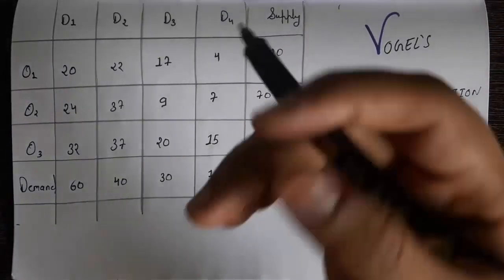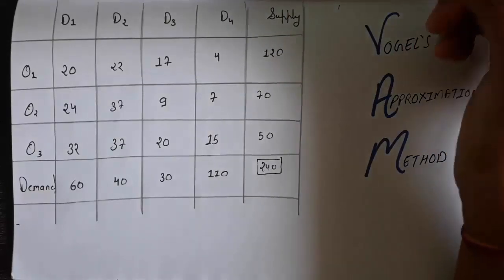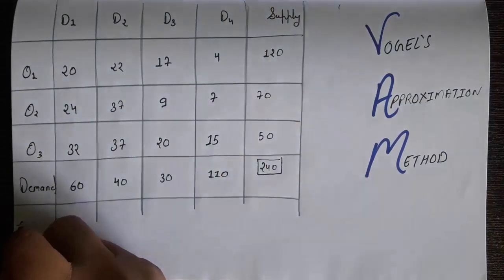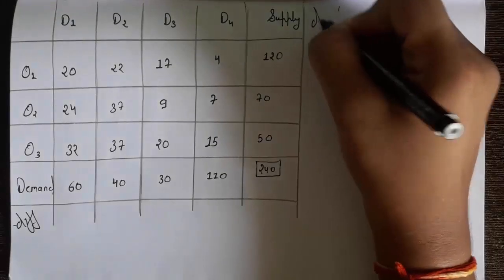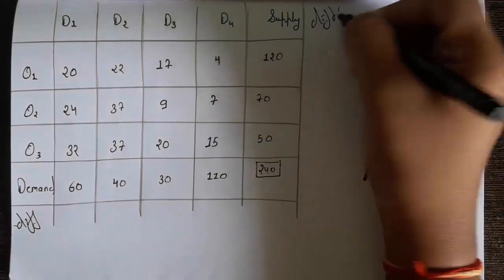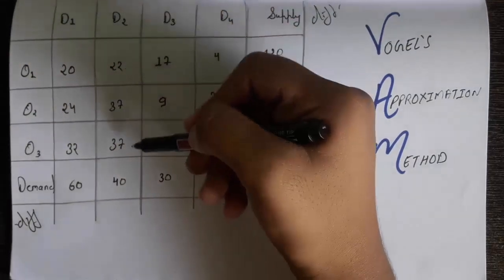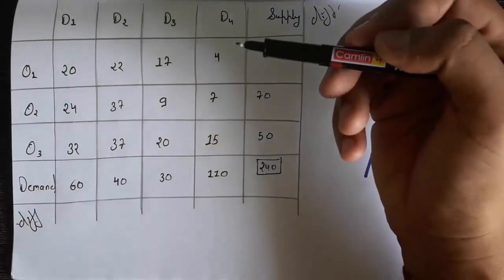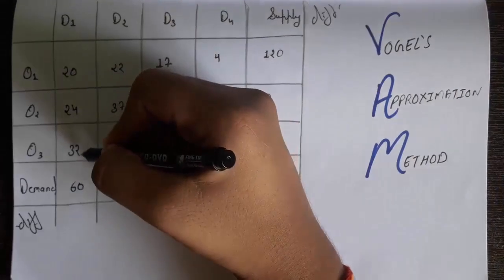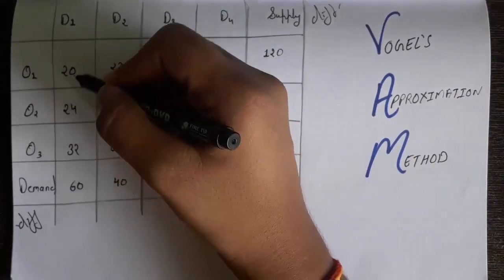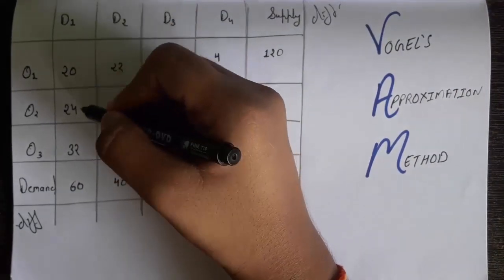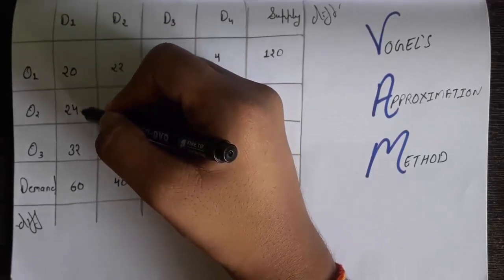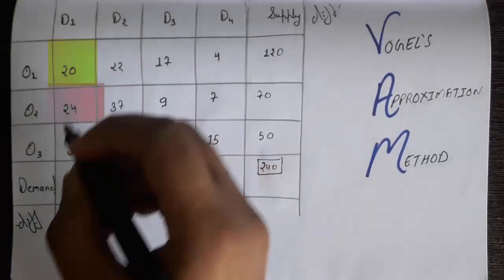In this method, you mainly look at the difference between the data values. There will be a new row and column called 'difference' added on both sides. We start from the columns and find the smallest number and the next smallest number. In the D1 column, among 20, 20, and 32, the smallest is 20 and the next number is 24, so the difference is 4.